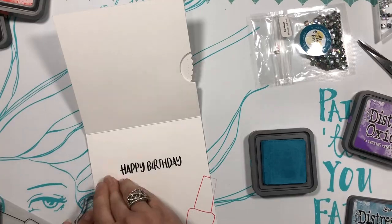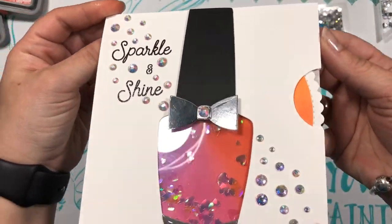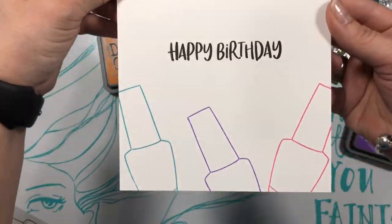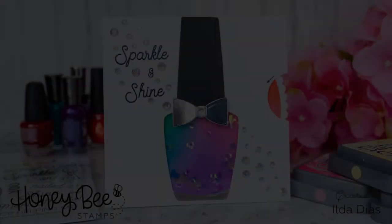And that pretty much finishes off this card. I hope you've enjoyed watching how to create your own spin reveal card using supplies you may already own. For links to all the supplies I used from Honey Bee Stamps, check out the links below. And for more inspiration using these products, check out the Honey Bee Stamps blog. Thank you all for spending some time with me today, and until next time everyone, happy crafting. Bye!